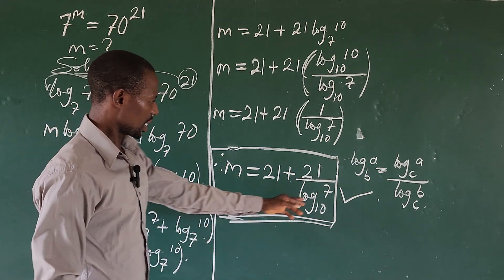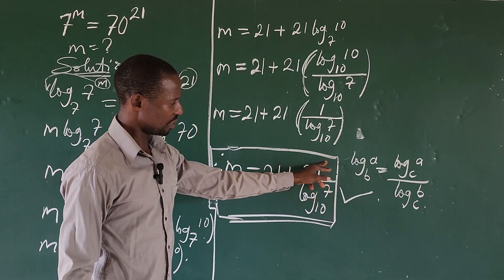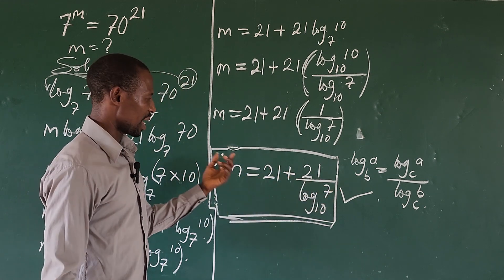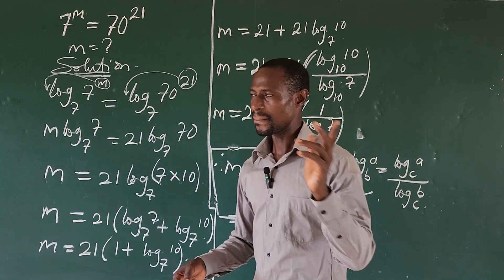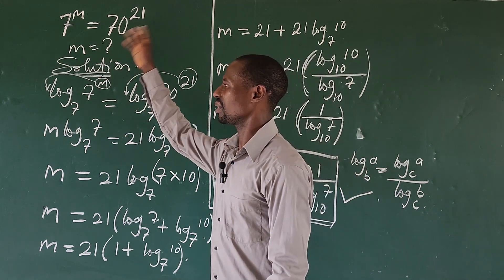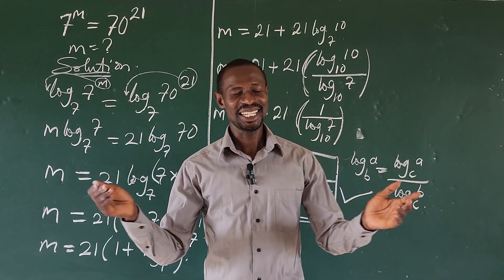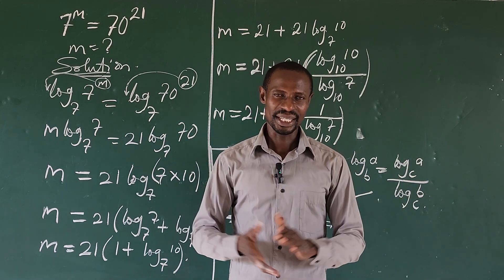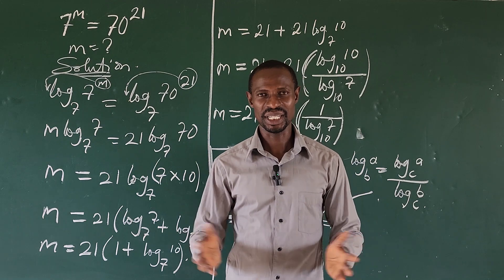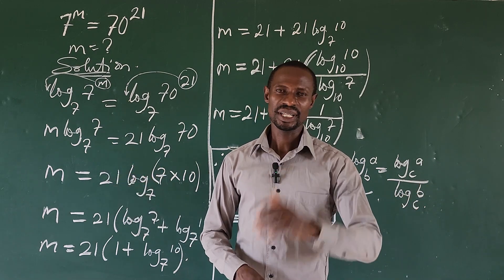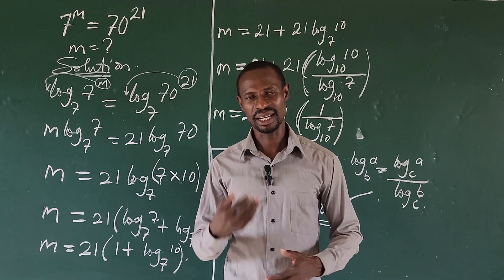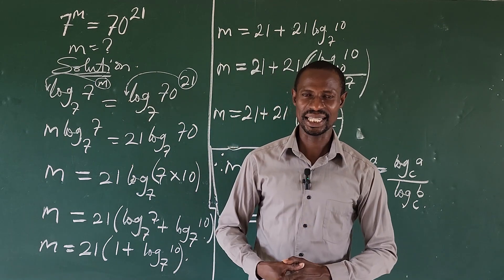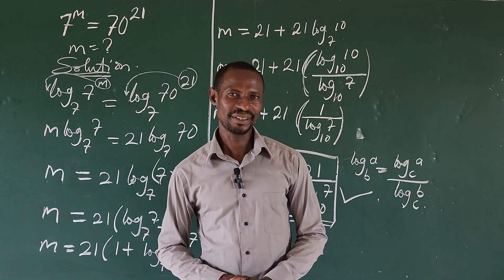We can use a calculator to find the numerical value: divide 21 by log base 10 of 7, then add 21, and that gives the numerical answer. Plugging that back into the original equation will satisfy it. If you missed something from this video, give it a thumbs up and drop a comment — leave a question and we'll reply. Thank you, and see you in the next video!